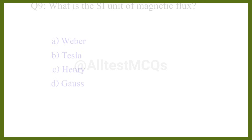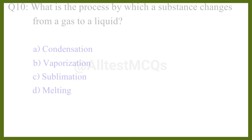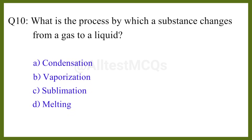Question number nine: What is the SI unit of magnetic flux? The correct answer is option A: Weber. Question number ten: What is the process by which a substance changes from a gas to a liquid? The correct answer is option A: condensation.